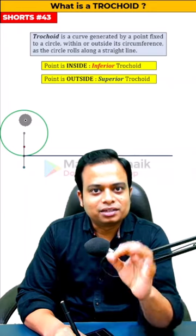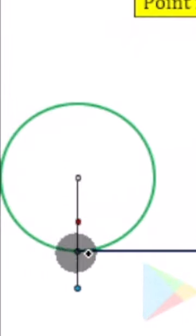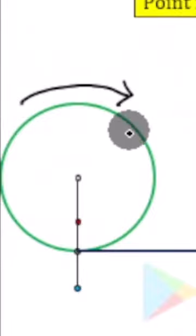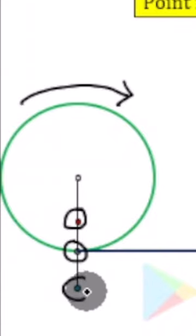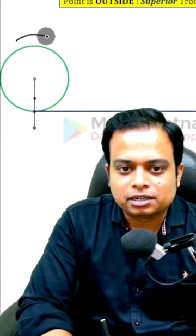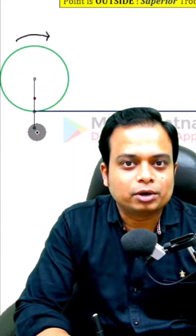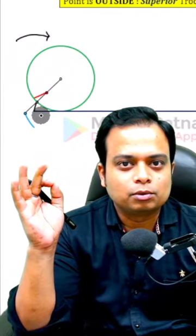In this single video, we explore three types of curves. The arrangement shows a rolling circle and a straight line on which it is about to roll. We have three points: one on the circumference, one inside it, and one outside the circumference. As the circle starts rolling, we need to keep track of these three points.